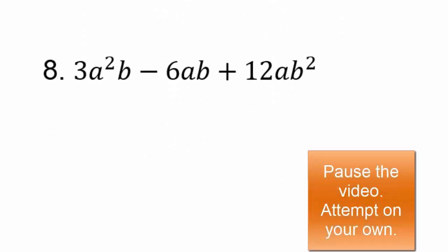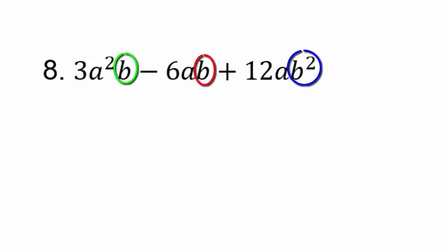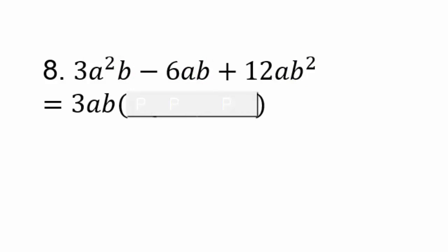Let's take a look at the next one. We have 3, 6, and 12 — so 3 is the greatest common factor of those. We have a squared, a, and a so we get a; b and b and b squared so it will be b. So 3ab is our greatest common factor. Then: 3ab times a gives 3a squared b, 3ab times negative 2 gives negative 6ab, and 3ab times 4b gives 12ab squared. That's how you check — distribute 3ab across the addition and subtraction and get exactly what you started with.